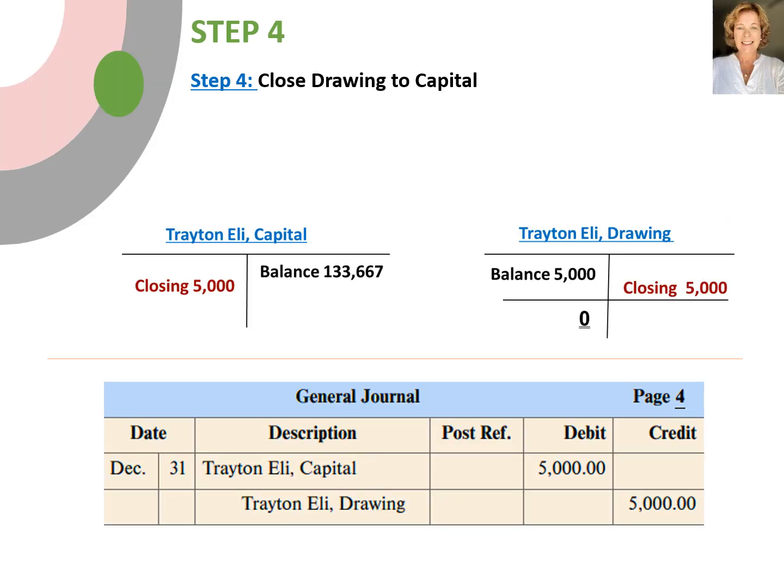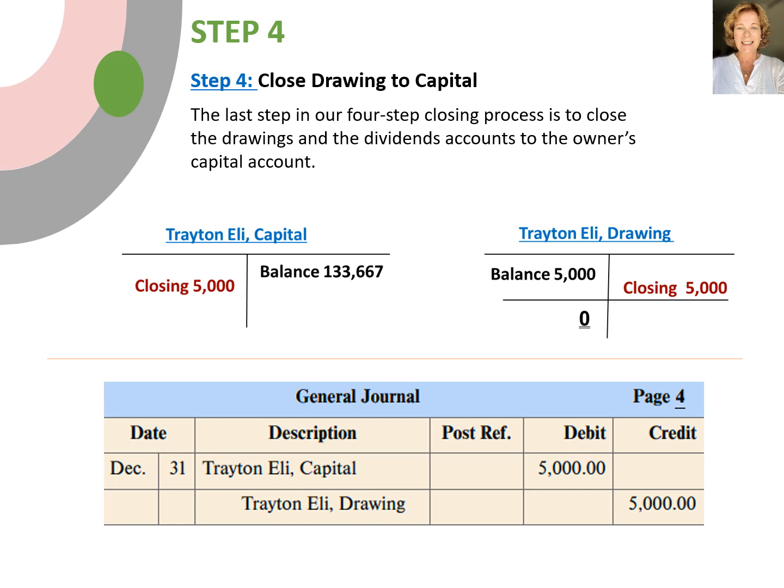The last step in our four-step closing process involves closing the last temporary accounts — the drawing account and the dividend account — to the owner's capital account. We have a drawing account with a debit balance of $5,000 which we need to close out to the owner's capital account. We debit Trayton Eli Capital and then credit Trayton Eli Drawing. We'll write the date, then Trayton Eli Capital with $5,000 in the debit column, and on the next line slightly indent and write Trayton Eli Drawing Account with $5,000 in the credit column.